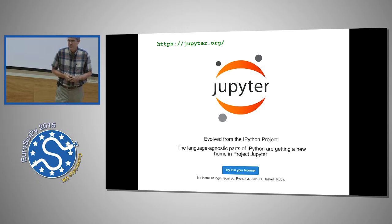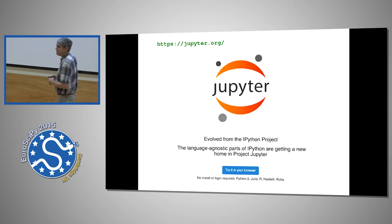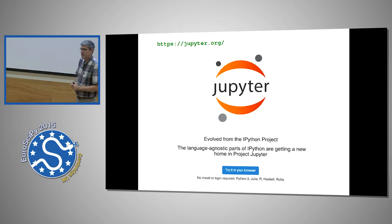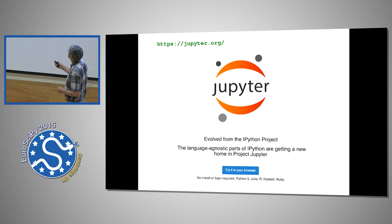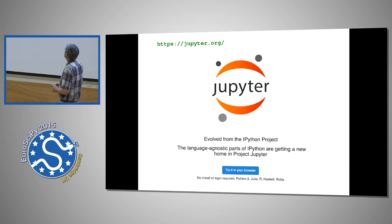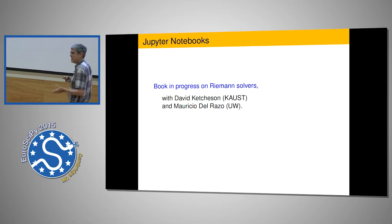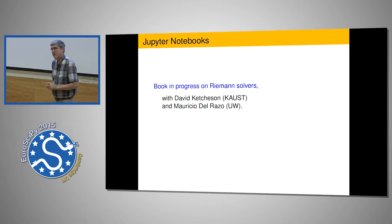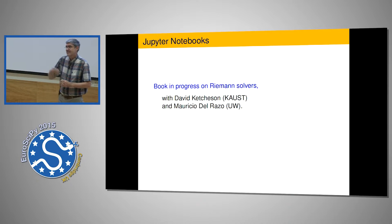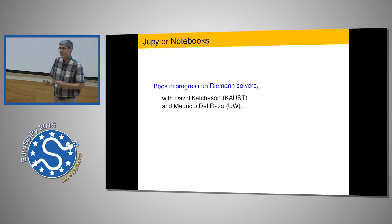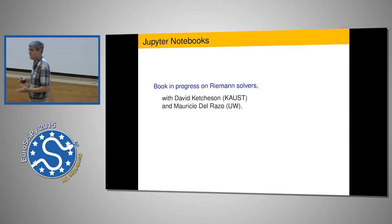Jupyter is the new name for IPython Notebooks—the platform has been made more general so it's easier to use with Julia, R, and other languages. You can try it out in the browser at jupyter.org. One thing I'm working on now is a new book on Riemann solvers for various problems, where each chapter will be accompanied by a notebook that the student can use to explore interactively in a much more hands-on way.